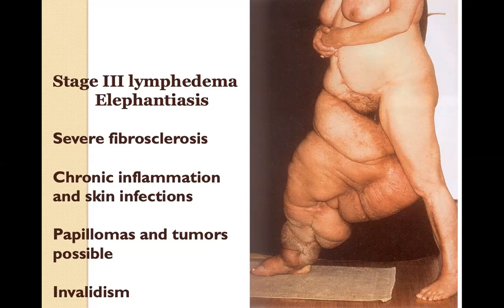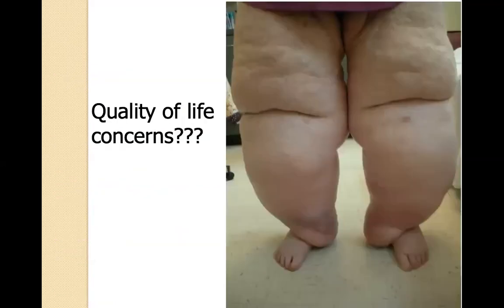In very advanced stage three, there is chronic inflammation, possible fungal infection near the ankle, and papillomas visible as bumpy areas on the distal posterior thigh. Many adverse skin changes occur with increasing severity of lymphedema. If the limb becomes so large the patient cannot move, this leads to invalidism.